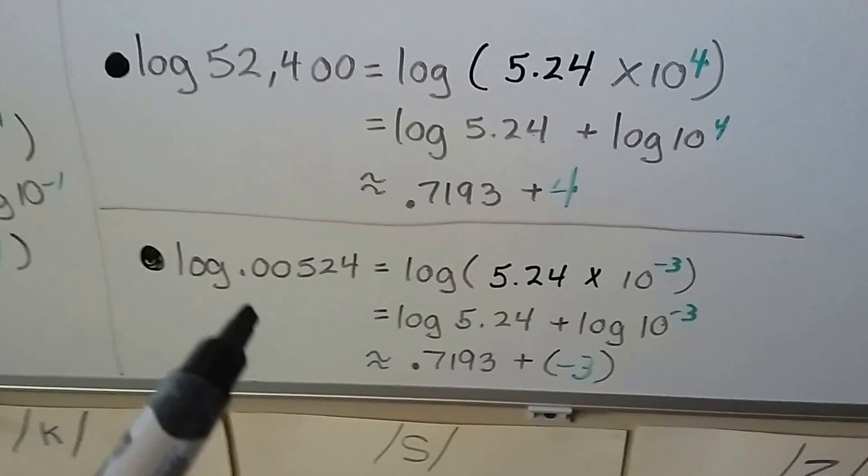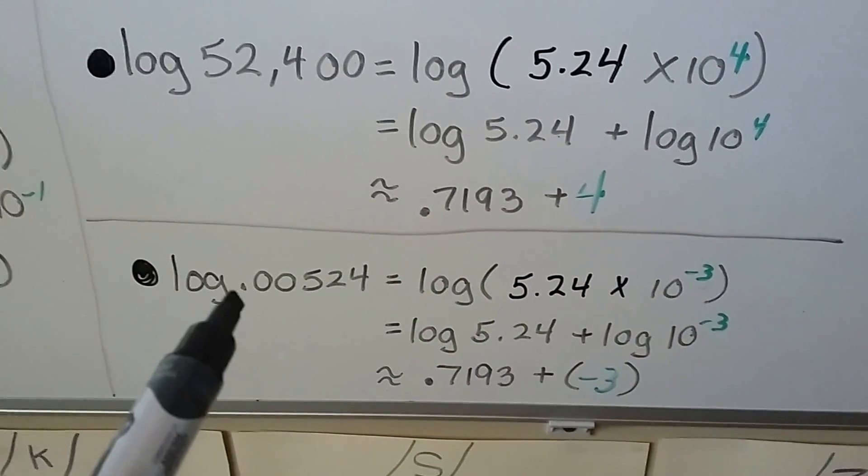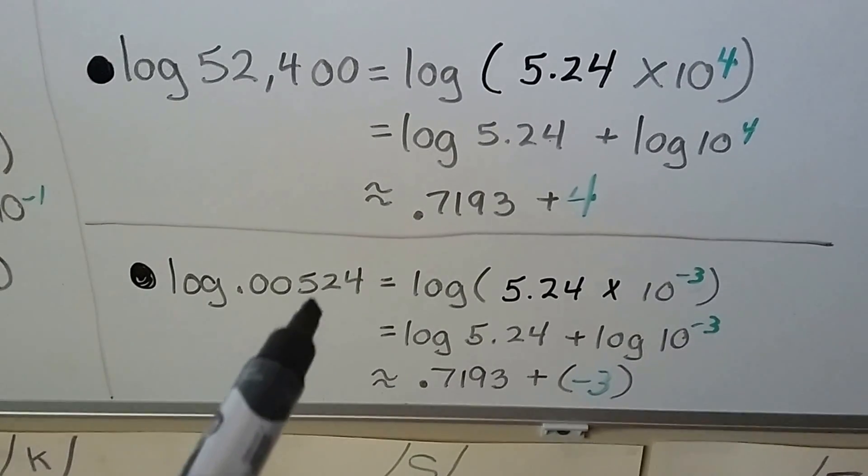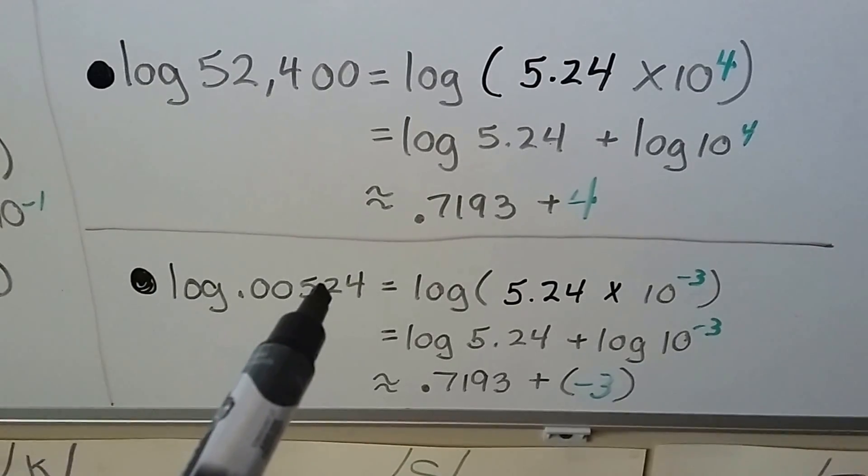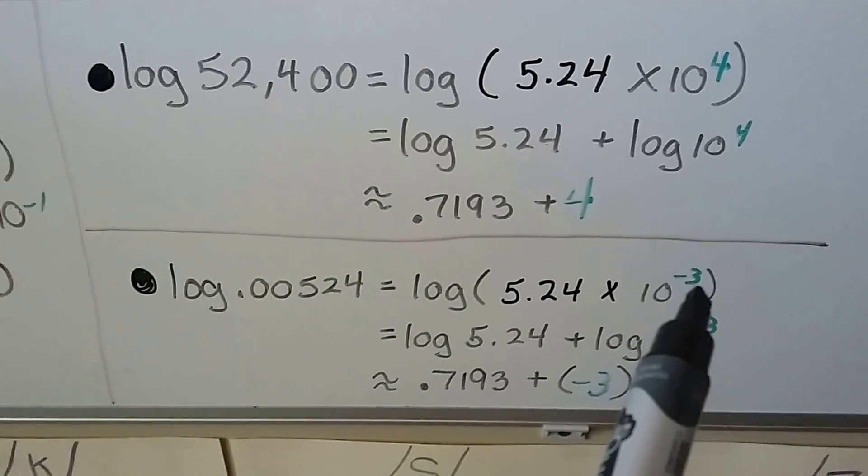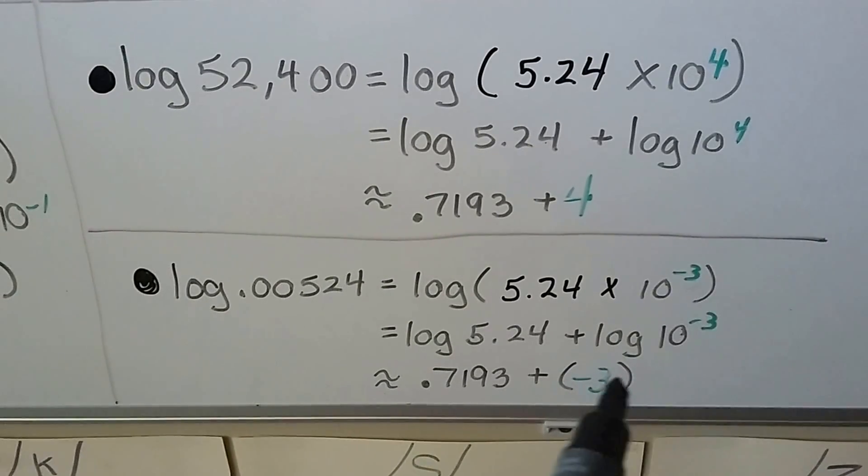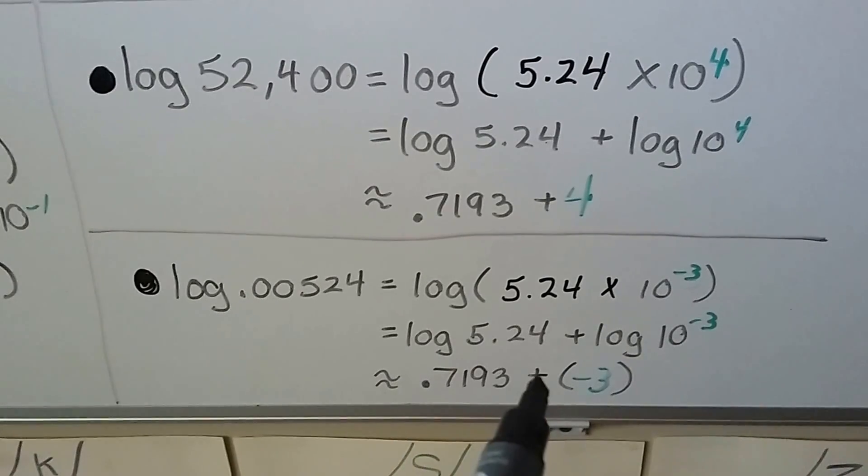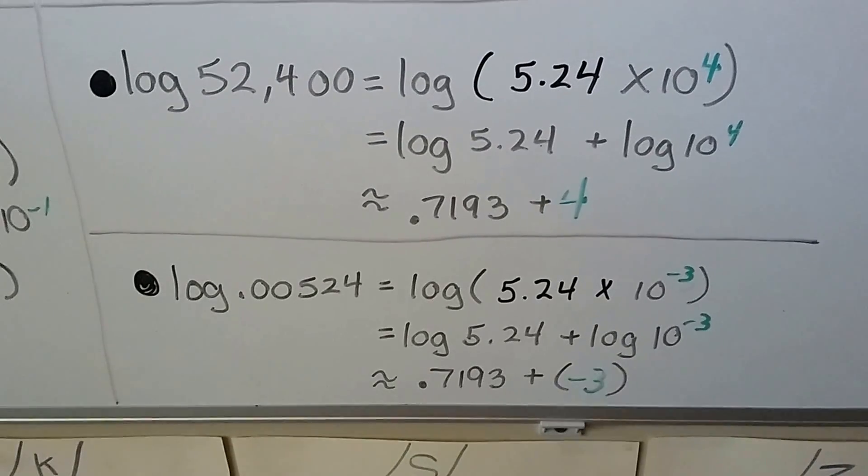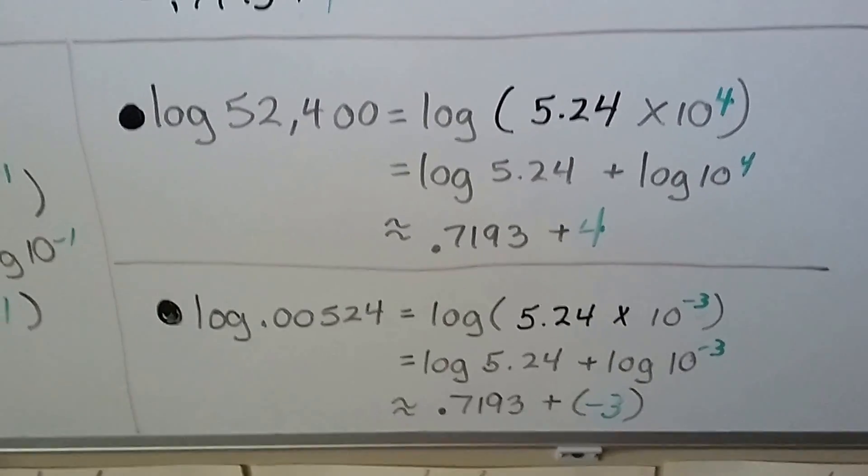Let's look at this one. We've got 0.00524. We have to move the decimal point to the right 1, 2, 3 to be in between the 5 and the 2. So we're going to have a negative 3 exponent in scientific notation. So we're going to have 0.7193 plus that negative 3.